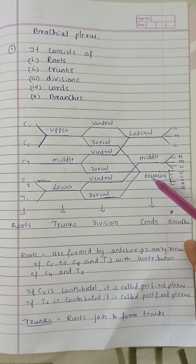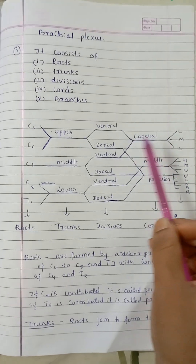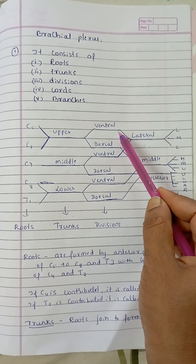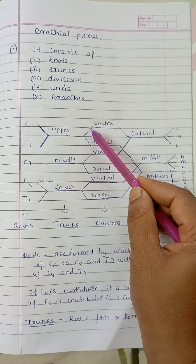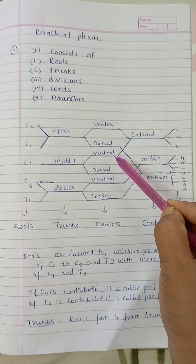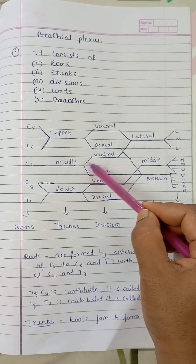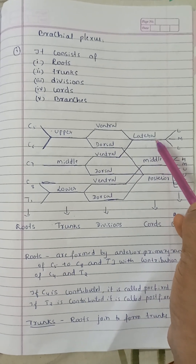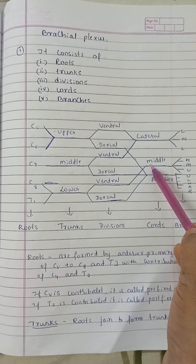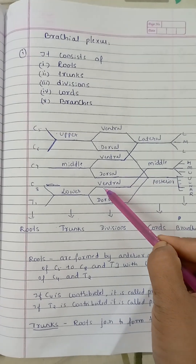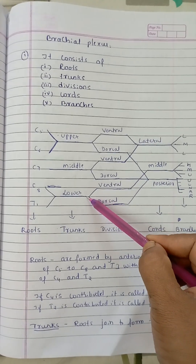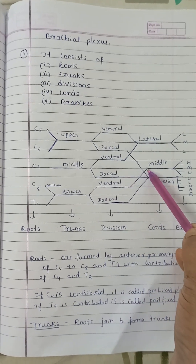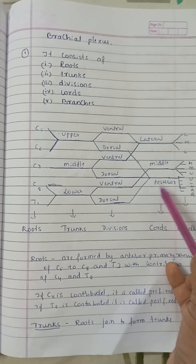The three cords are the lateral cord, medial cord, and posterior cord. The lateral cord is formed by the joining of the ventral division of the upper trunk and the ventral division of the middle trunk. The medial cord is formed by the ventral division of the lower trunk.